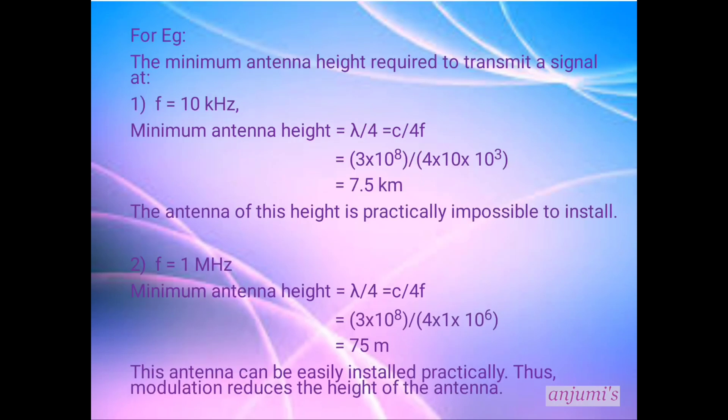Let us consider an example to find minimum antenna height required to transmit a signal at f = 10 kHz. Minimum antenna height = λ/4 = c/4f. We can substitute the values: 3×10⁸ divided by 4×10×10³. When we calculate, we get the answer as 7.5 km.